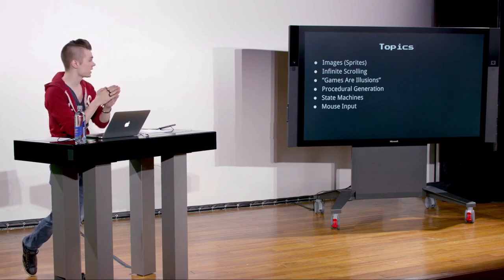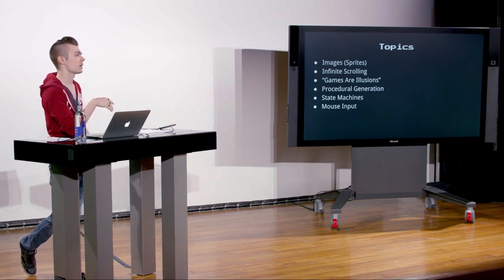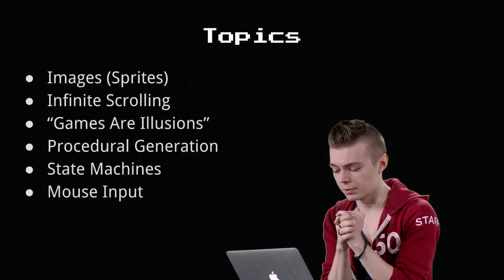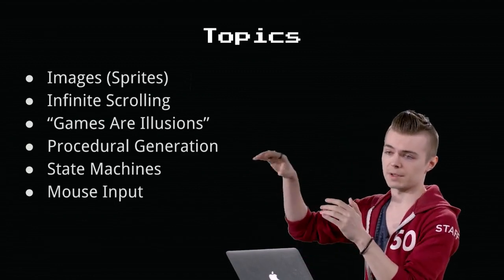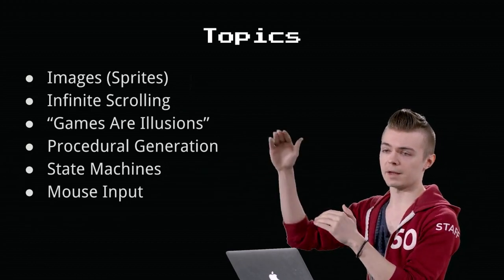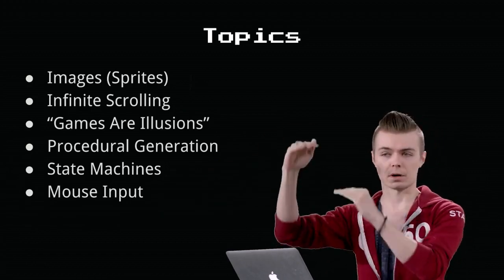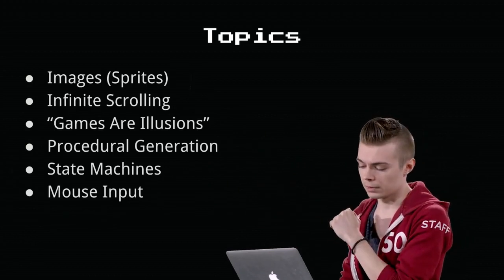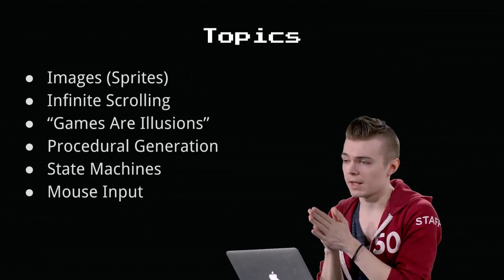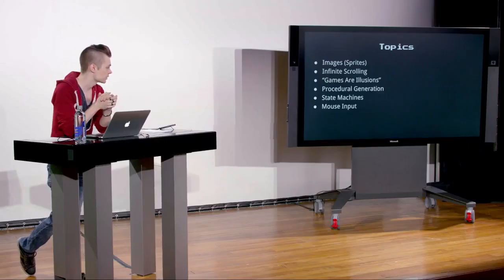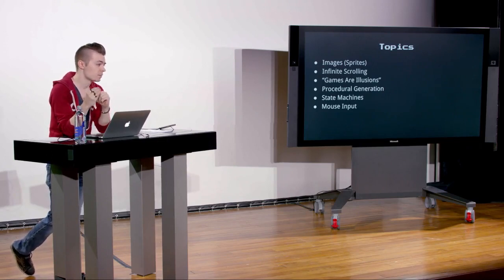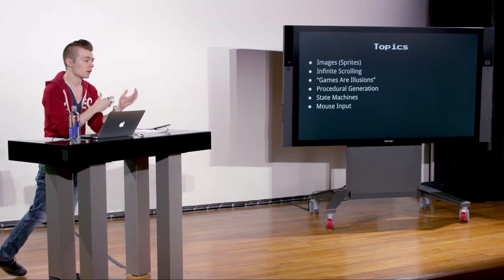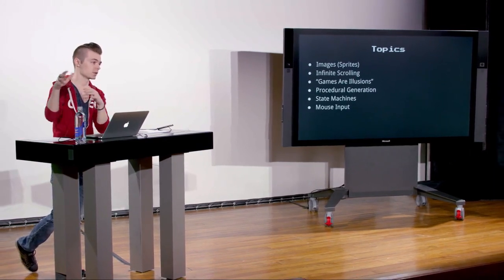We'll be covering procedural generation, which ties into infinite scrolling. In the context of today's lecture, we'll use it for the pipes — they spawn from right to left at various heights, with shifting gaps, creating an infinite level. We'll also talk more in detail on state machines. Last week we used just a string variable with if conditions; today we'll use an actual state machine class with methods that allow us to transition between states cleanly, breaking logic out into separate state classes.